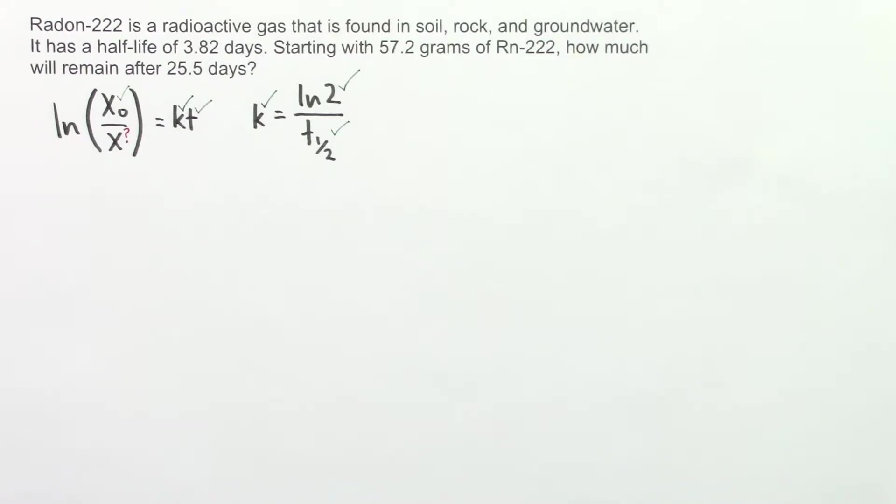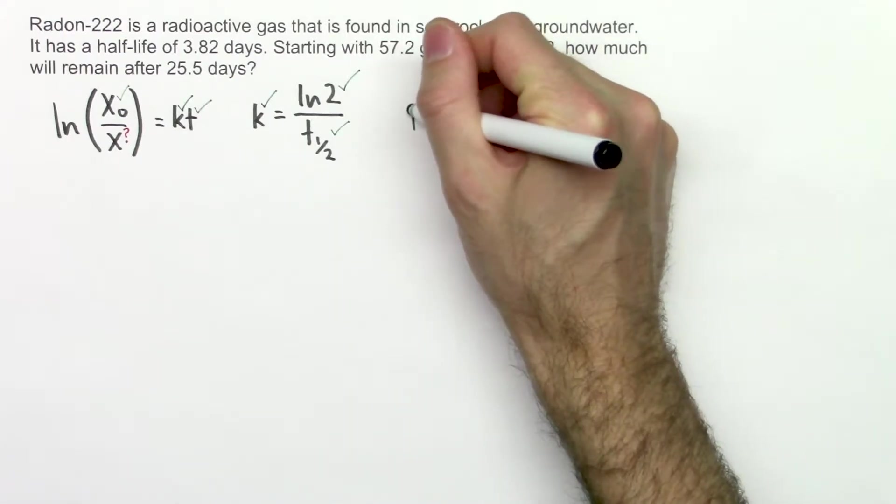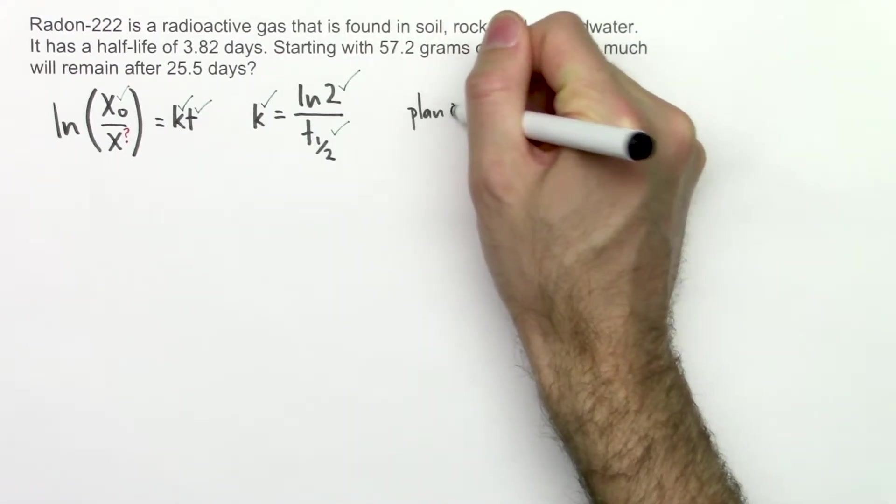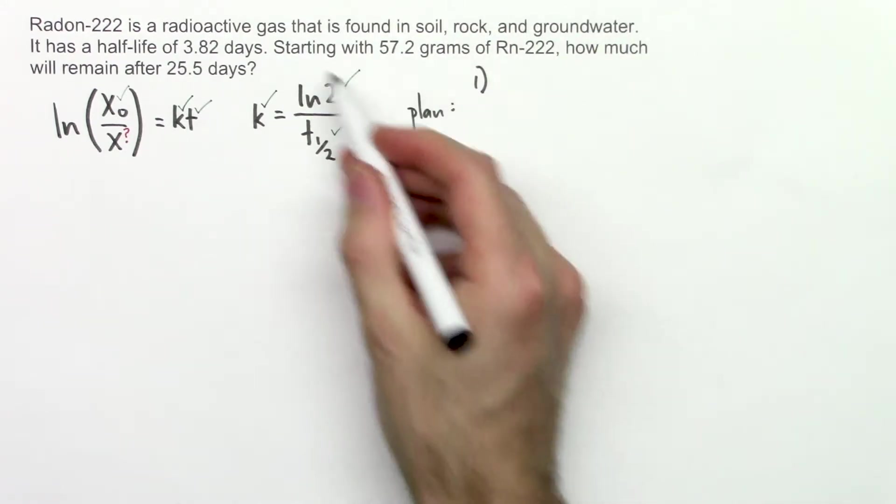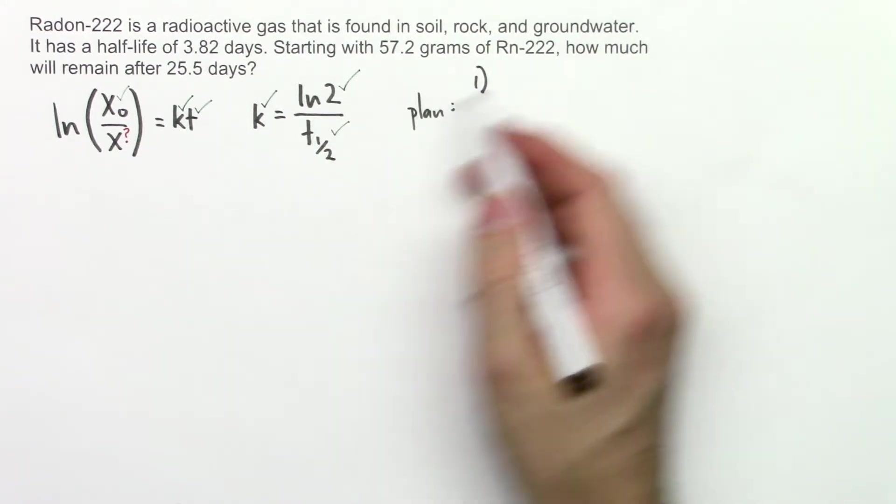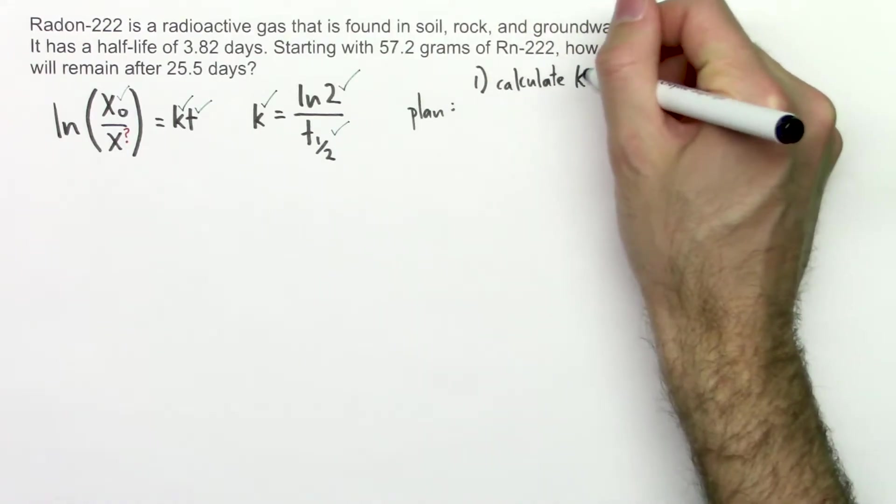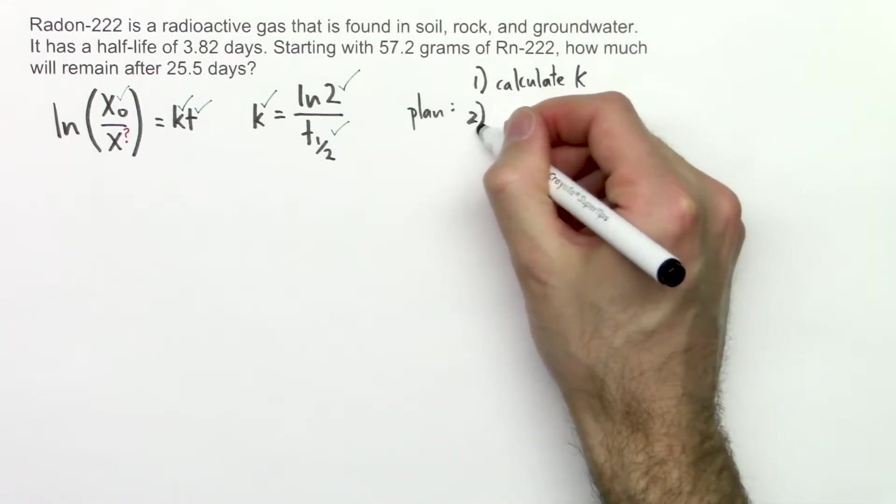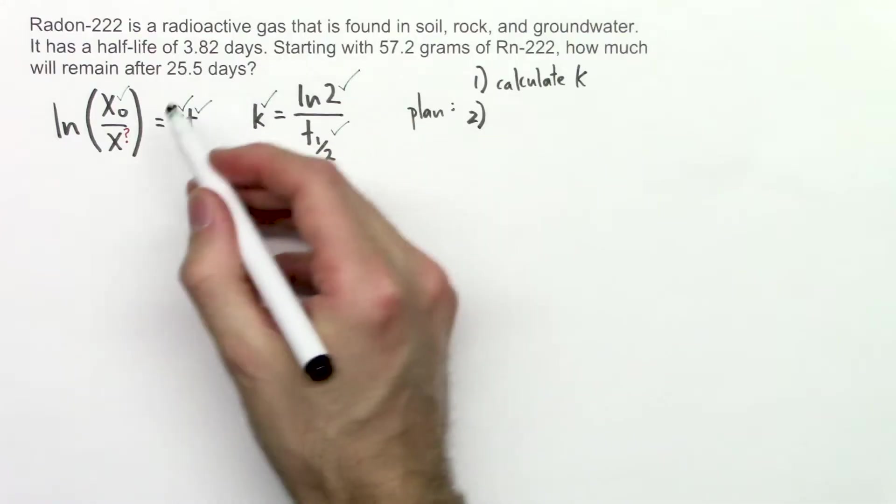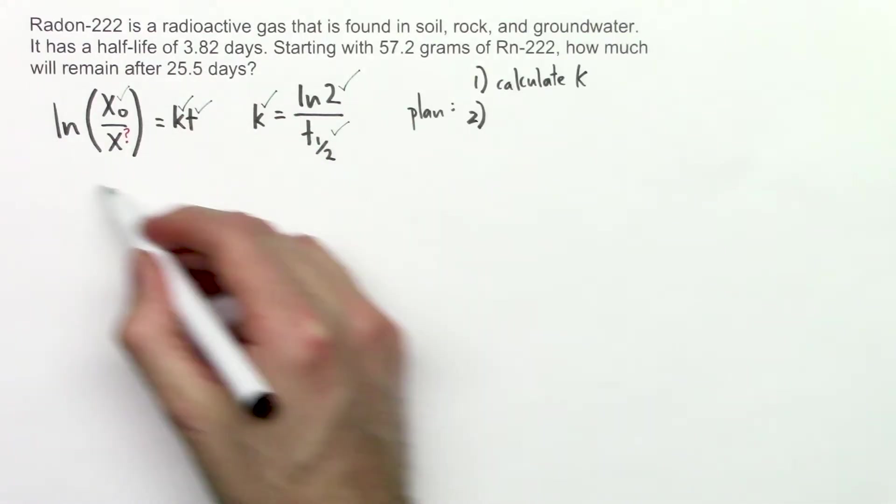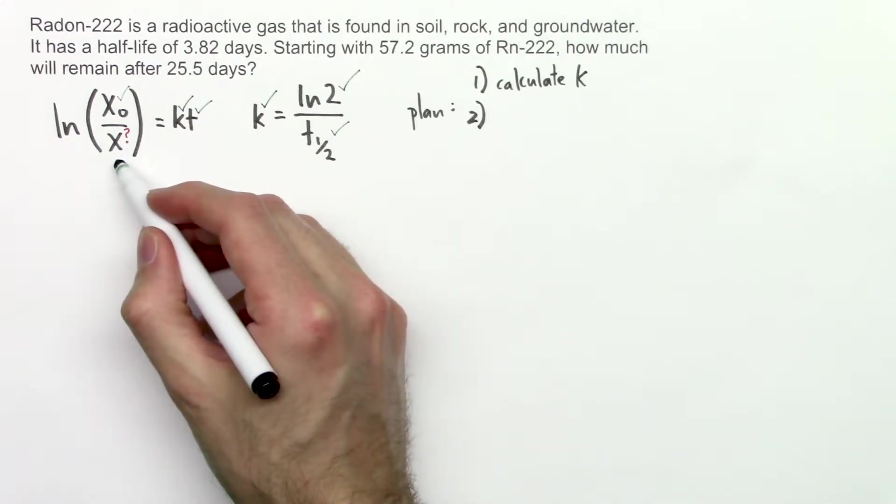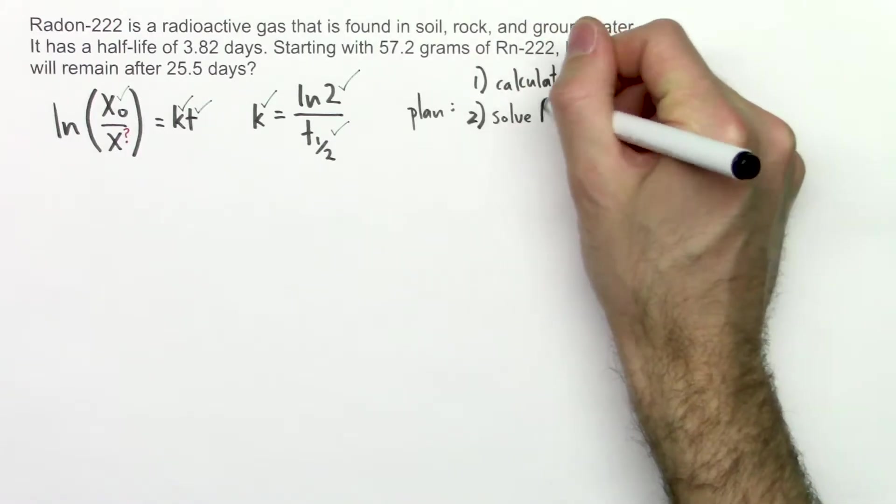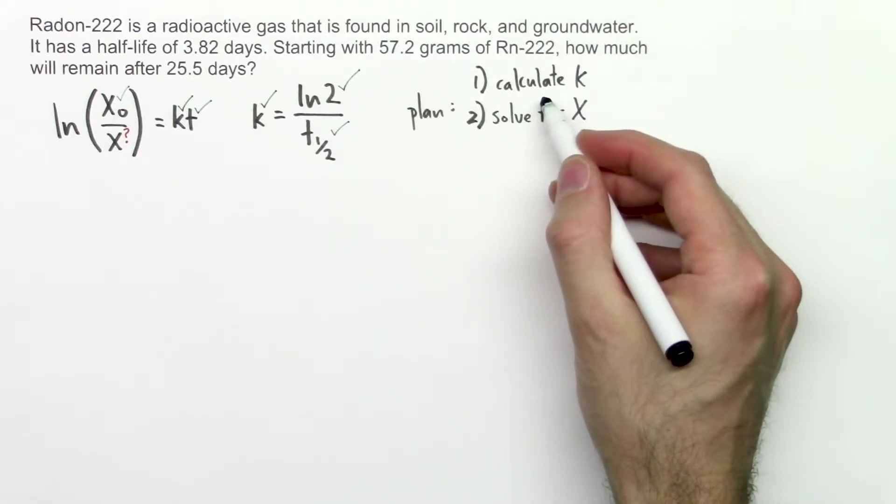Let's go through and just sketch out a quick plan. The first thing that we'll do is we'll calculate k using this equation. Then, once we have k, we'll be able to plug it into this equation and we'll be able to solve this equation for x.